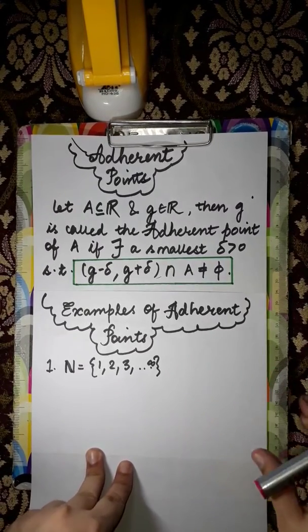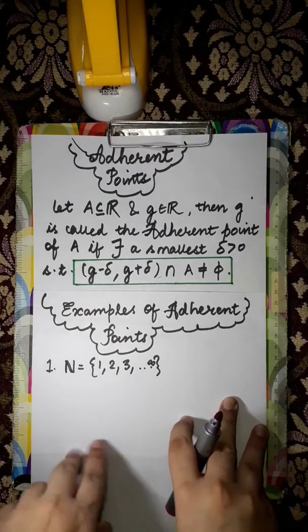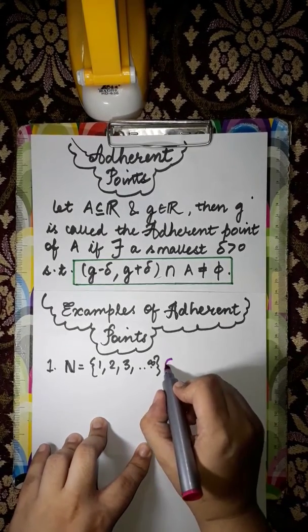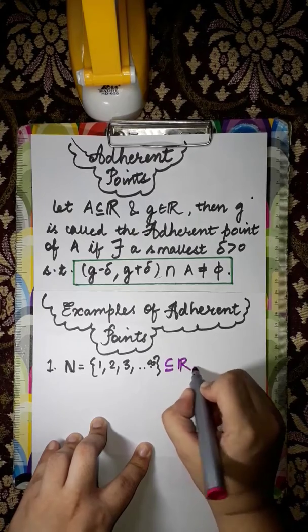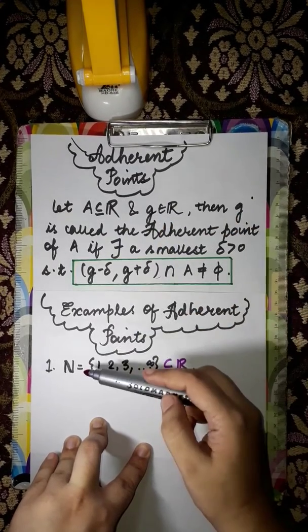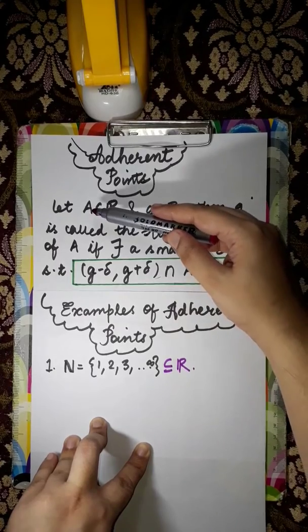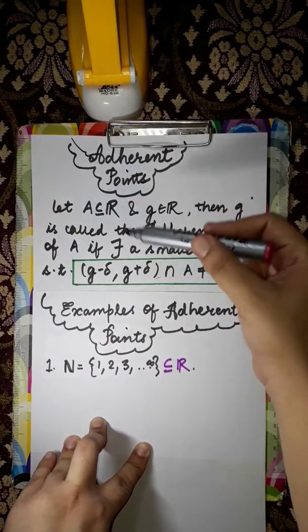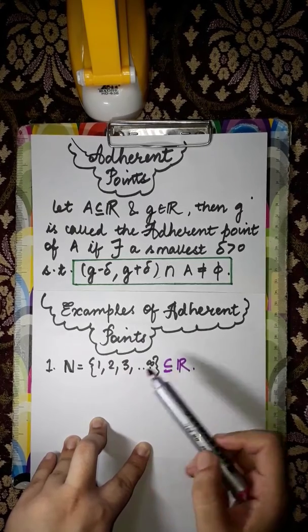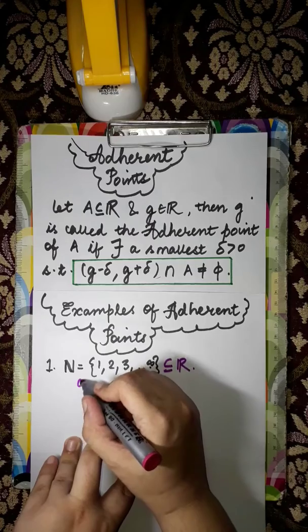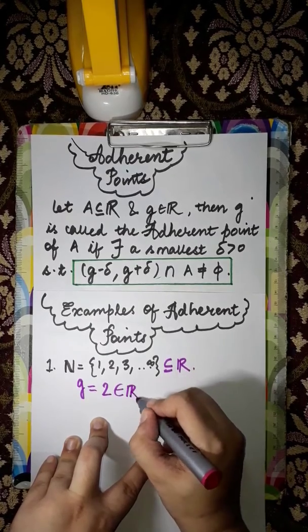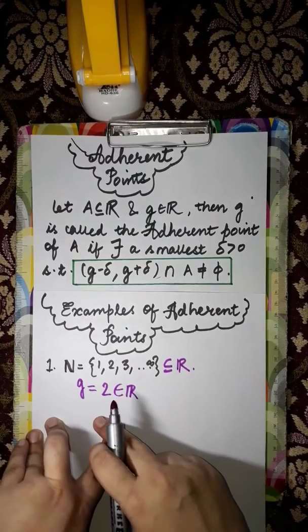Hello everyone. In this video we will discuss examples of adherent points. First we will find the adherent points of natural numbers. Natural numbers are a subset of real numbers. By the definition of adherent point, natural numbers act as the set A. We will take any g that belongs to ℝ which also belongs to ℕ. Let us take g = 2, which belongs to both natural numbers and real numbers.